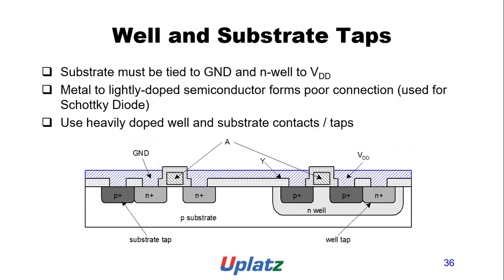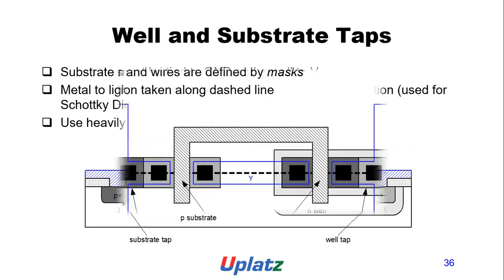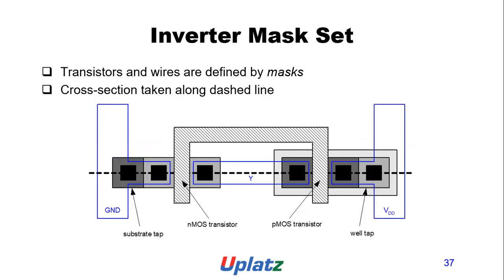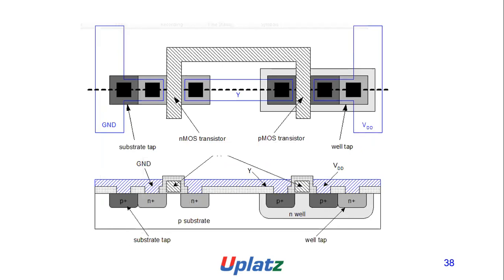Well and substrate: the substrate must be tied to ground and the N-well tied to VDD. Metal to lightly doped semiconductor forms an ohmic connection used for a Schottky diode. Use the N-well and substrate contacts shown. The figure shows the layout after mask, with substrate tab, ground, VDD, NMOS and PMOS transistors, and well tab.